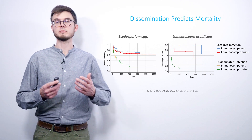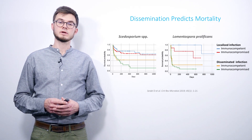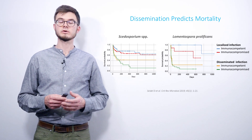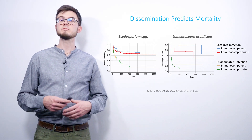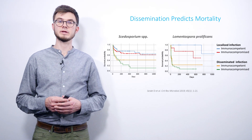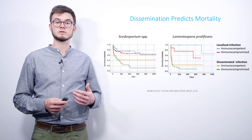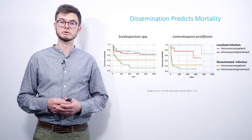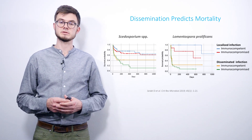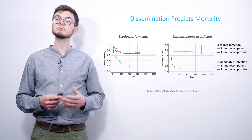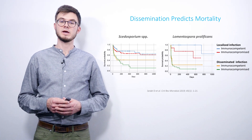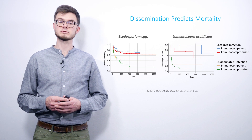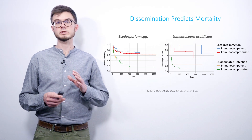What about the outcome of these infections? In green and yellow, disseminated infections of immunocompromised and immunocompetent patients are displayed respectively. Dissemination has a worse outcome in both populations and with both species. Lomentosporiosis dissemination has an even worse outcome, and median survival of these patients was only around one week.